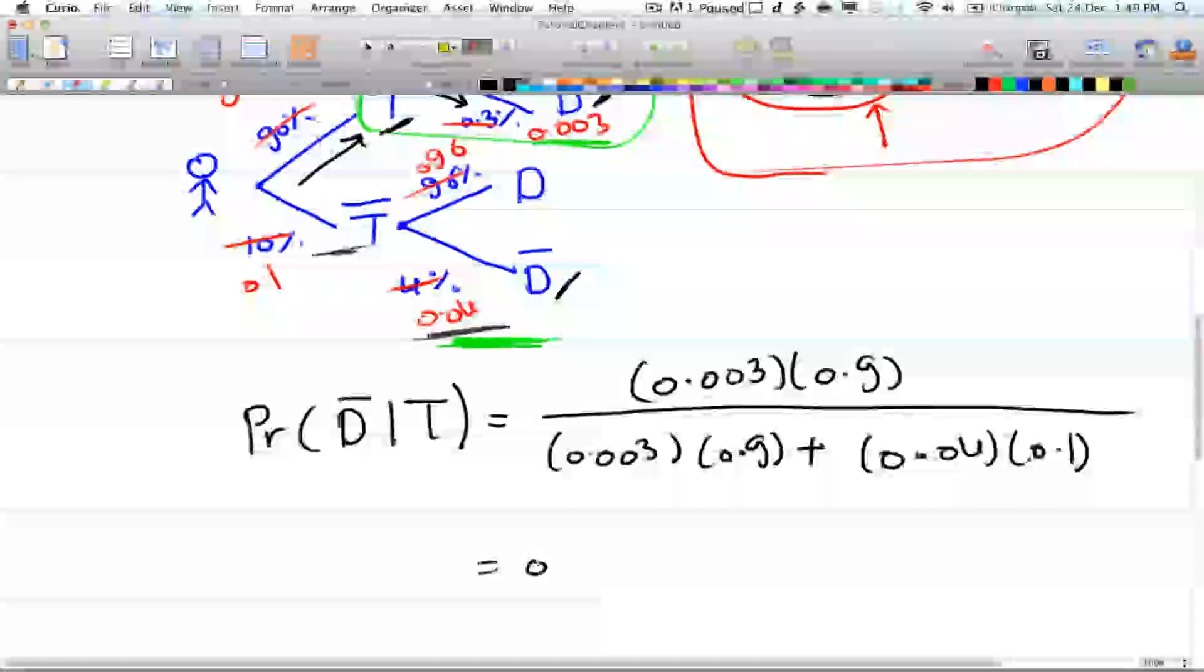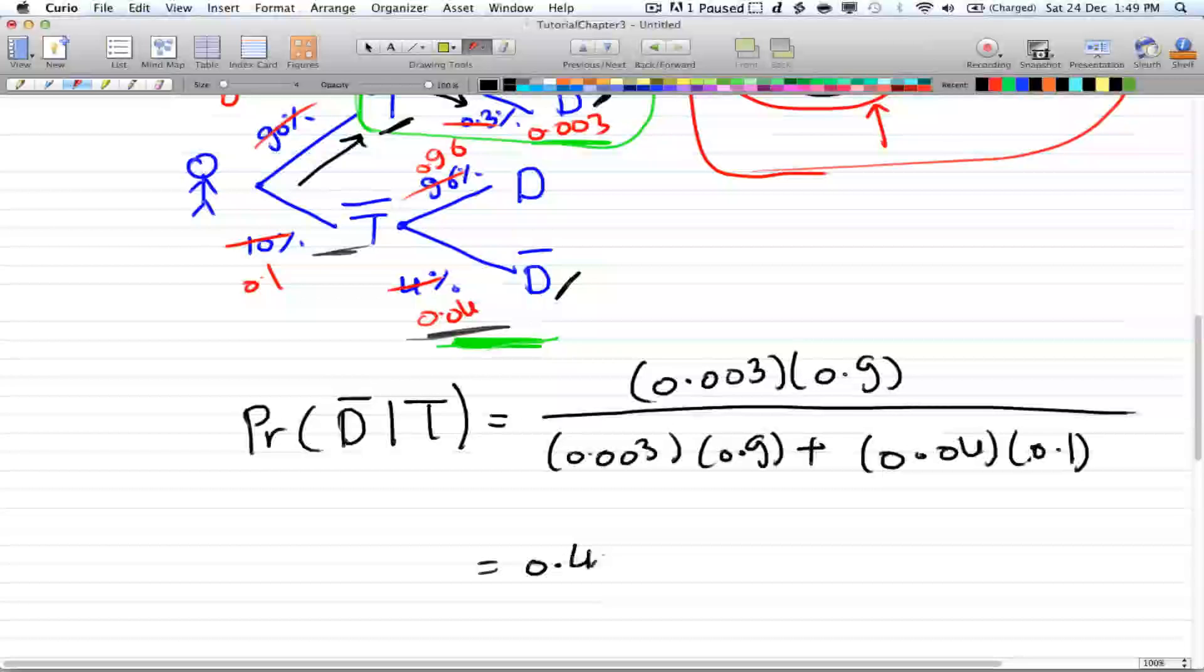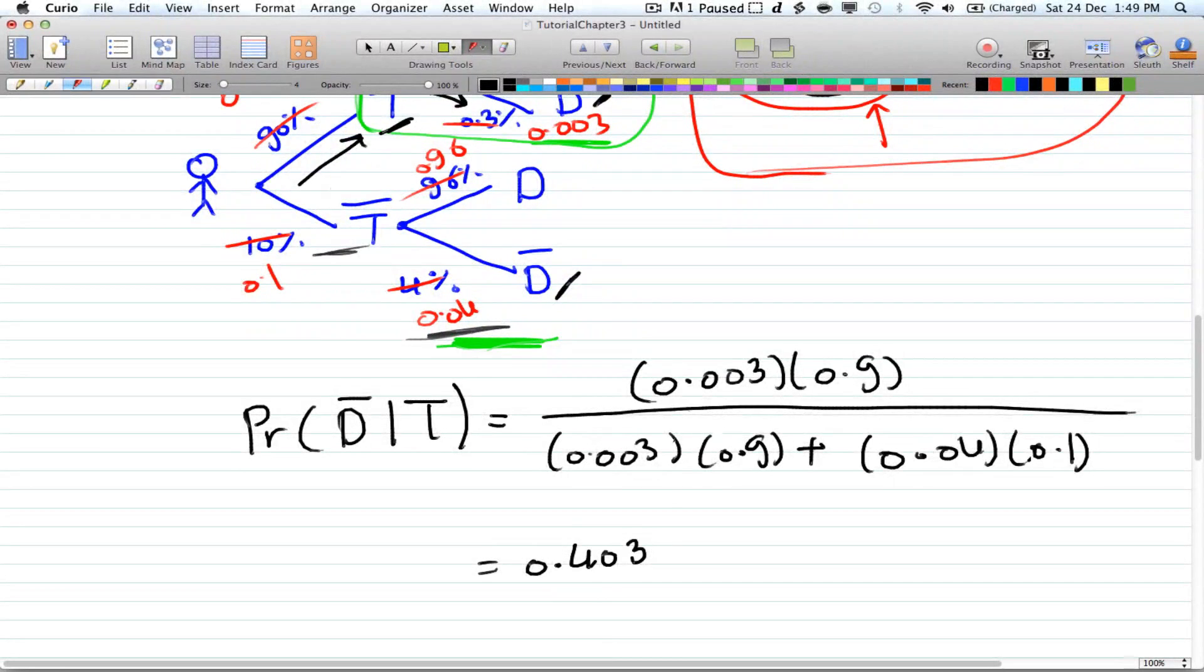And that is equal to 0.4029, so just 0.43. And this is the probability that someone fails to detect a weapon given that they have training.